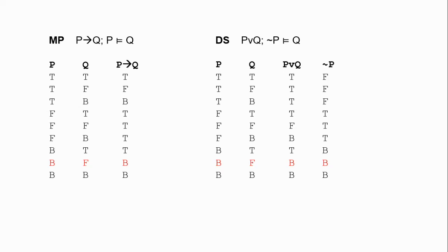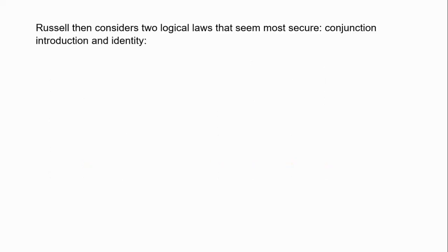Rather than examining each logical law one by one, Russell takes two purported logical laws that seem the most secure: conjunction introduction and identity. For conjunction introduction, if you have two atomic sentences P and Q, this entails the conjunction P and Q. For identity, P entails P. Russell argues that there are interpretations providing counterexamples to both. If even conjunction introduction and identity fail as logical laws, then it starts to look like there might be no logical laws at all.